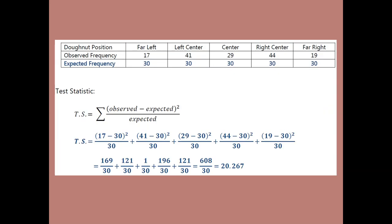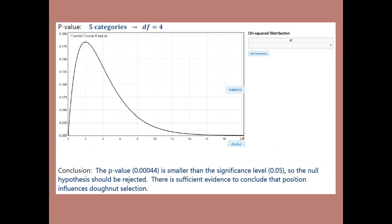Having the table helps put the test statistic together — you go column by column to get those five components. Simplifying, you get a test statistic of 20.267, which looks big, and that's because it is big. With five categories, we have four degrees of freedom. It's a right tail test, as with any chi-squared test, and the cutoff is 20.267, giving a very small p-value of .00044. The p-value is less than the significance level, so we reject the null. There is sufficient evidence to conclude that position does influence donut selection.